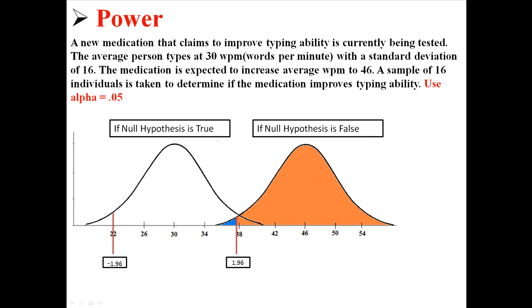So given that the null hypothesis is actually false you can see that there is a large orange area. If the distribution is actually over there then there's a very good chance that we're going to end up rejecting the null hypothesis and saying that, okay, so it actually did increase average WPM to 46. This orange area is our power. Remember power is our probability of making the correct decision, correctly rejecting the null hypothesis when the null hypothesis is false.